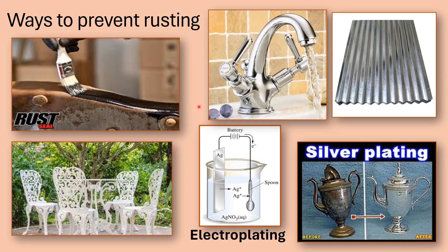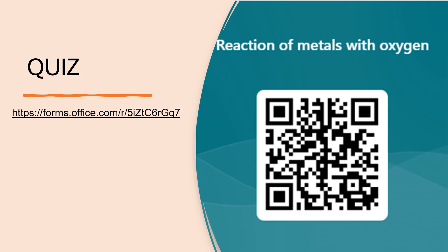Here are a few photographs of how we can prevent rusting: we can paint the object — you can see outdoor furniture that has been painted. We can put a layer of rust seal on the object, keeping the moisture and oxygen away from the iron. For taps, we can cover them with a layer of chromium. On iron plates, we can cover them with zinc. And through electroplating, we can cover something with a layer of silver, copper, or chromium. These are the ways to prevent rusting. Lastly, you have to complete a quiz. I hope it goes well — thank you for watching.